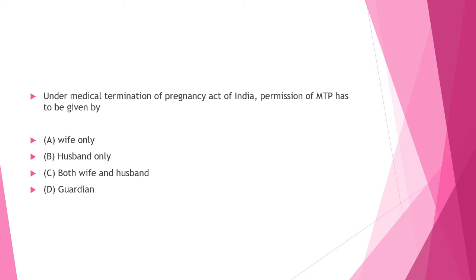Next question: Under the Medical Termination of Pregnancy Act of India, permission for MTP has to be given by — Option A: wife only, Option B: husband only, Option C: both wife and husband, Option D: guardian. Answer to this question is Option A: wife only.